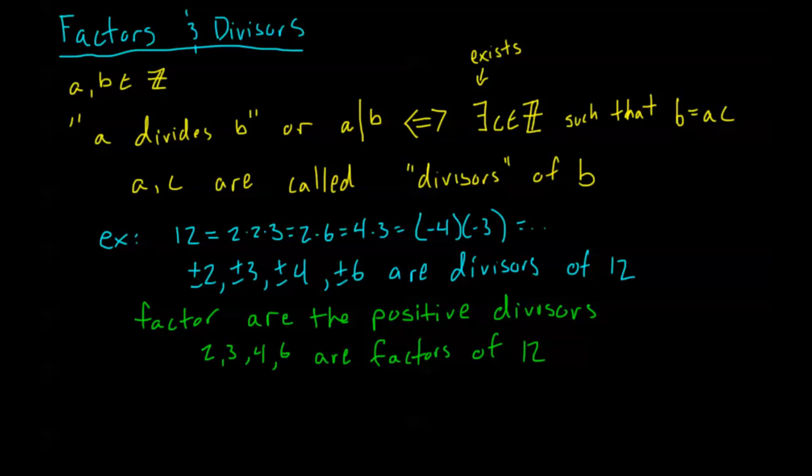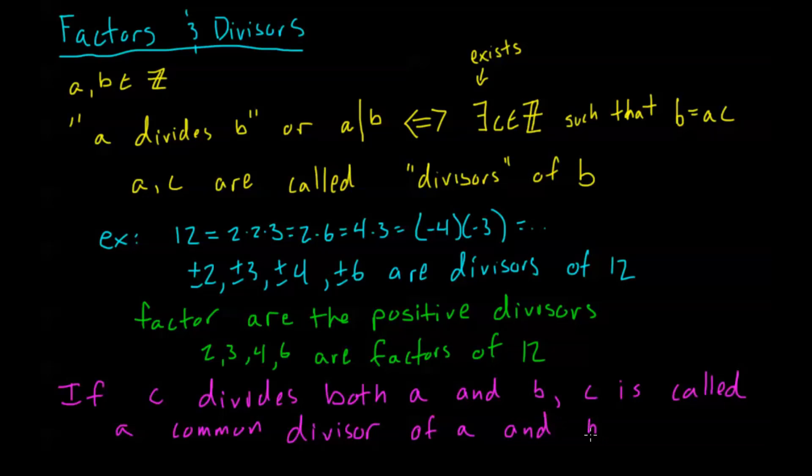Now we say, if a number C divides both A and B, C is called a common divisor. Now this is a lot of definitions here. But C is called a common divisor of A and B. Alright, so we can have lots of common divisors of numbers. C, it's definitely not always going to be unique.